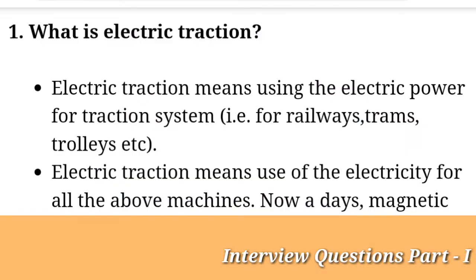The first question is: what is electric traction? Electric traction means using electric power for a traction system. In railways, we use electrical power to run trains — that is electric traction. Not only trains, but trams and trolleys etc., if run with electric power, are also called electric traction.